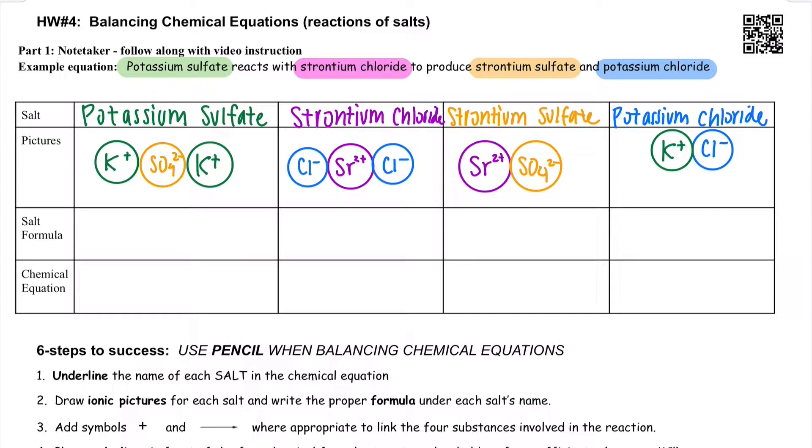Next we write the salt formulas. Potassium has two in the formula, one SO4, no parentheses needed. Strontium chloride, one strontium, two chlorines. Strontium sulfate, it's a one-to-one and potassium chloride, also a one-to-one. Okay, so we've got the salt formulas all complete.